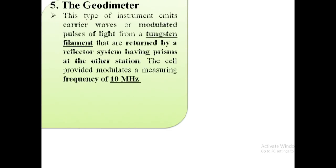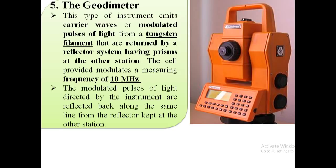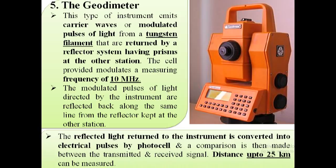Geodimeter: This type of instrument emits carrier waves or modulated pulses of light from a tungsten filament that are received by a reflector system having prisms at the other station. The cell provided modulates a measuring frequency of 10 MHz. The modulated pulses of light directed by the instrument are reflected back along the same line from the reflector kept at the other station. The reflected light received by the instrument is converted into electrical pulses by a photocell, and the comparison is then made between the transmitted and received signal. Distance up to 25 km can be measured by using a geodimeter.